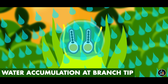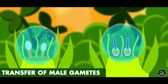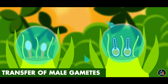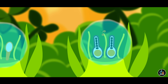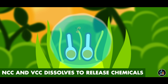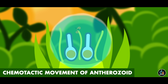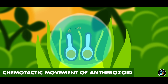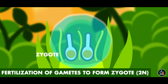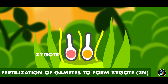During rainy season, water gets accumulated at the tip of the female branch too. The male gametes may be carried from a male branch to a female branch along with splashes of water. The neck canal cells and venter canal cells dissolve and release chemicals. This clears the path for entry of male gametes and also directs the chemotactic movement of antherozoids into the archegonium. The fertilization of antherozoid and egg results in the formation of a diploid cell for the first time in the life cycle, called the zygote.